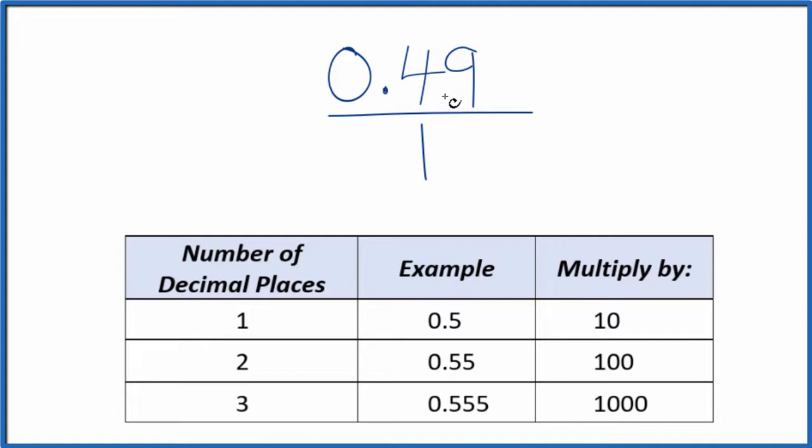What we need to do is get 0.49 here to a whole number, and we have two decimal places. We can just multiply by 100.